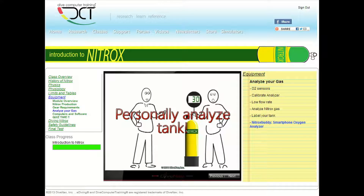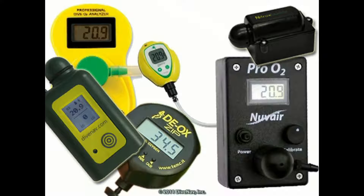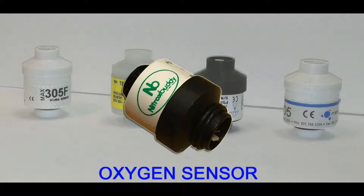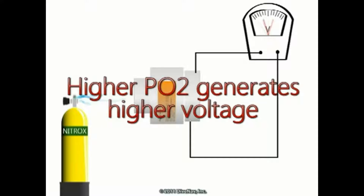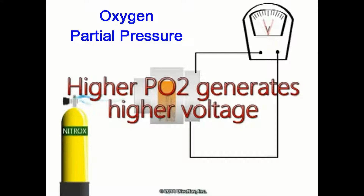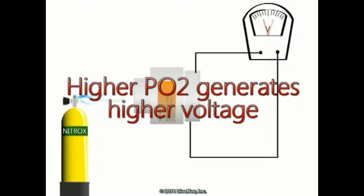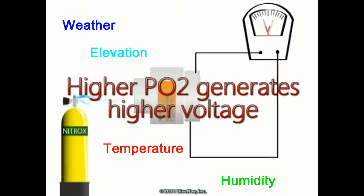As explained in our introduction to Nitrox online class, at the heart of every oxygen analyzer there is an oxygen sensor. The oxygen sensor is a chemical device that measures the partial pressure of oxygen, and as such, it is affected by changes in atmospheric pressure.